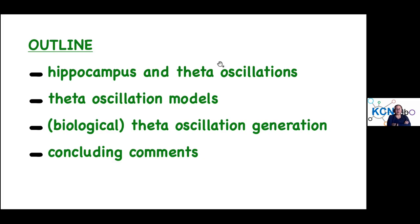Just a very brief outline: I'm going to talk a little bit about the hippocampus and theta oscillations, then theta oscillation models, and then get into the biological way in terms of how theta oscillations are generated or initiated, and then have some concluding comments. We're going to touch on earlier work and more recent work to bring about aspects that are not maybe fully appreciated for those interested in theta oscillation modeling.